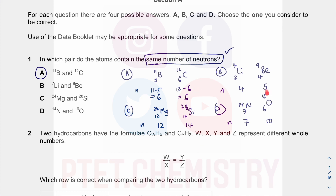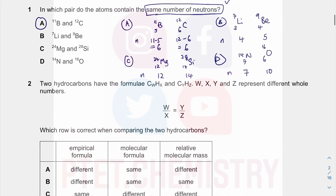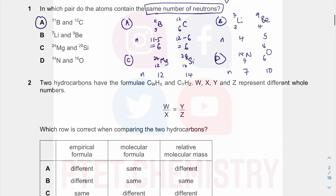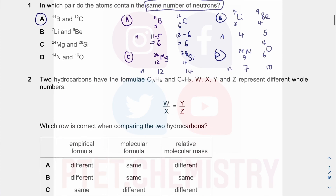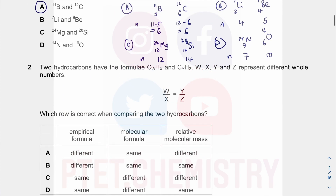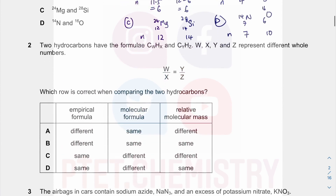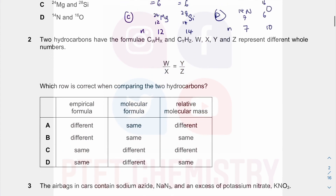I worked through the rest because in a theory paper they could ask you to verify the other options. The whole idea of this tutorial is not just to get to the answer but also to show you that the other distractors are incorrect — either by logic or by working them out. In the second question you have two hydrocarbons: CwHx and CyHz.